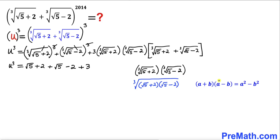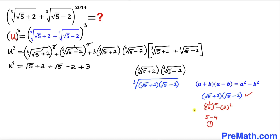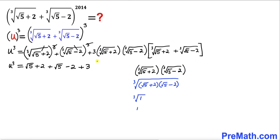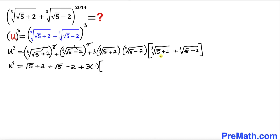Now let's recall the identity (a+b)(a−b) = a²−b², and apply it inside the radical sign. This gives us (√5)² minus 2², which simplifies to 5 minus 4 equals 1. So this whole thing has been simplified to 1. Therefore I'm replacing it by 1, and the remaining bracket is u.